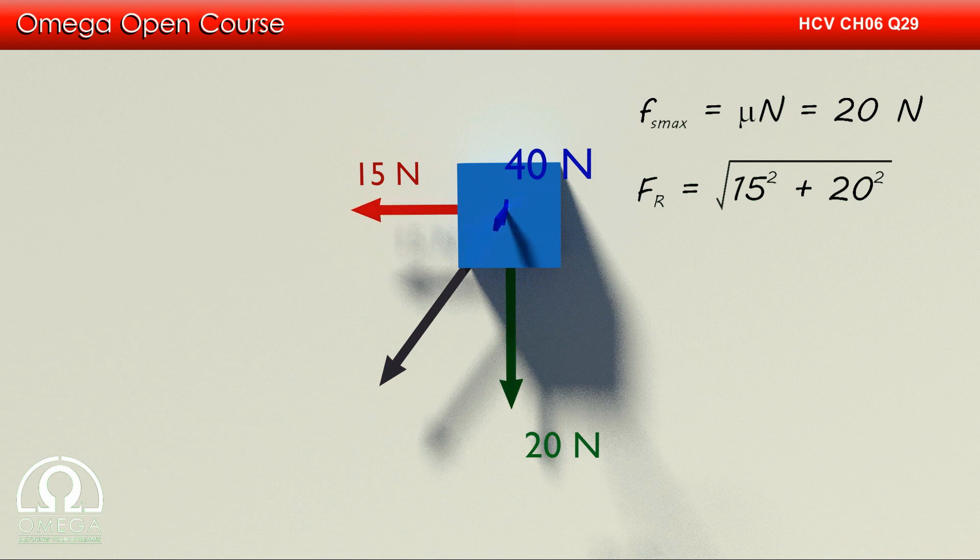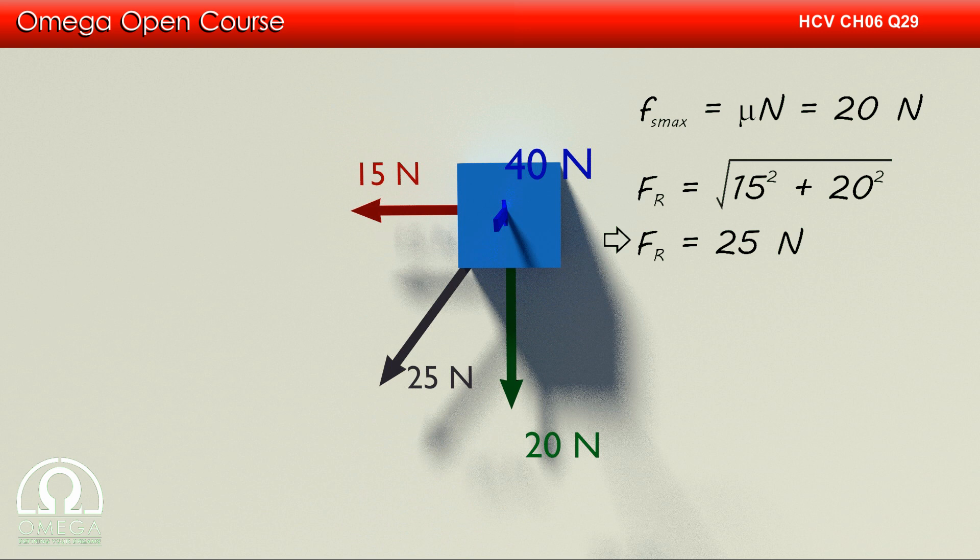From Pythagoras theorem, we know that the resultant of these two forces is root under 15 square plus 20 square, that is 25 N.